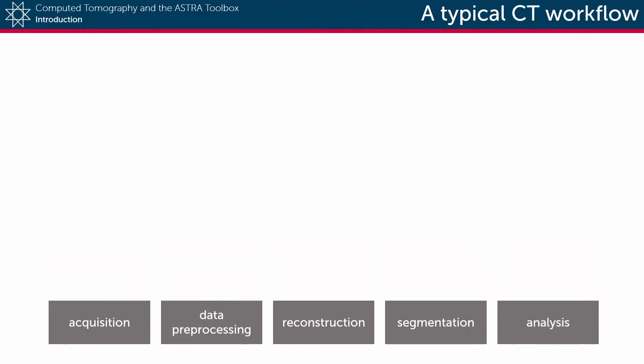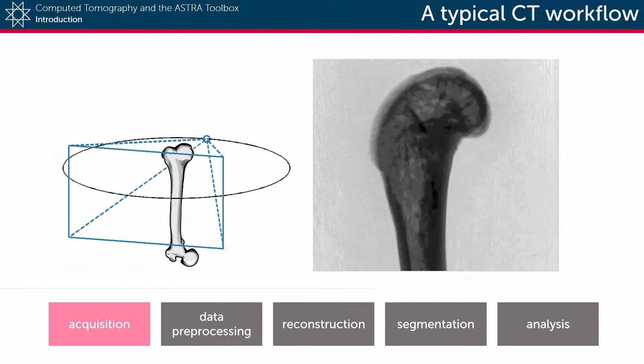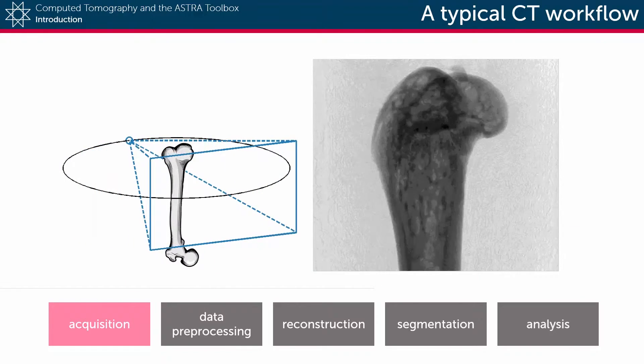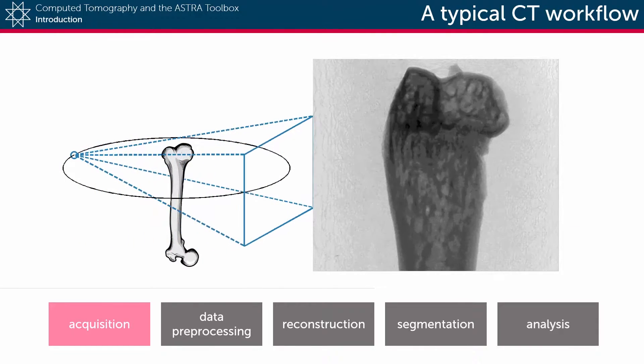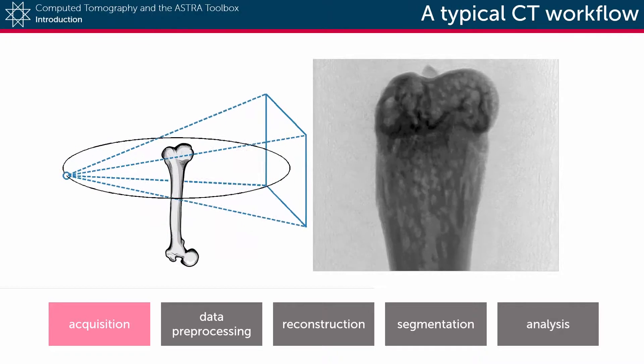In the acquisition phase, an object, such as a femur bone, is placed inside the scanner and x-ray projections are acquired from many different directions.